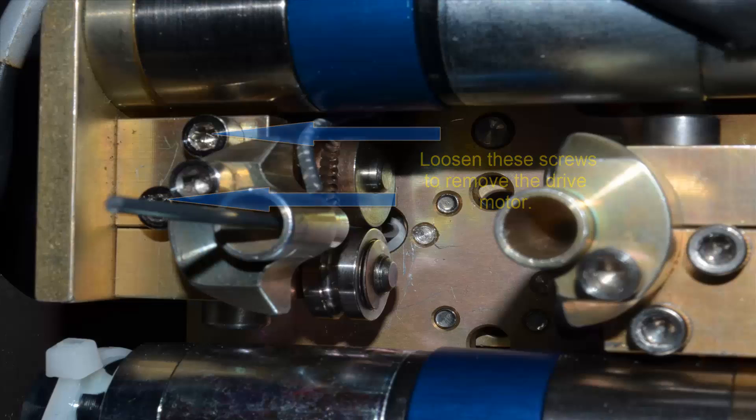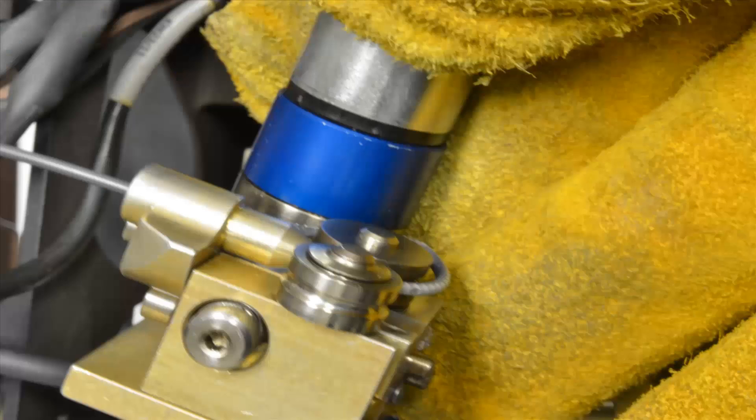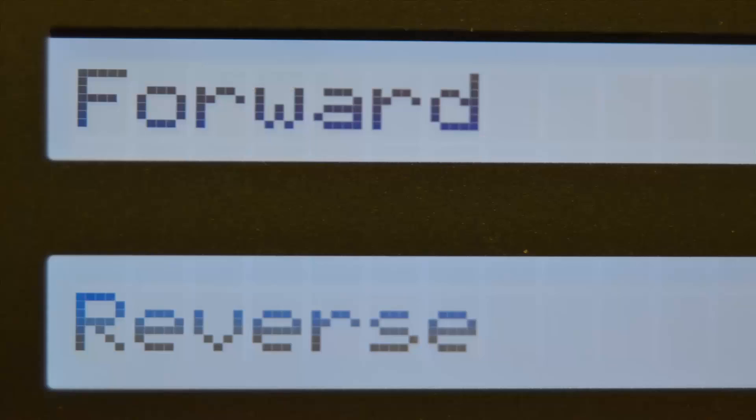After removing the drive motor, you'll be able to use the front panel menu to use the forward or reverse options to drive the material out of the motor mechanism.